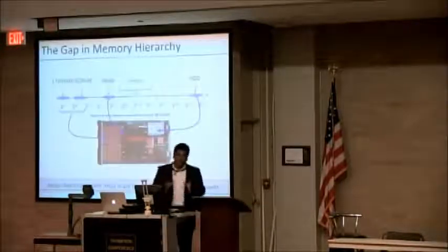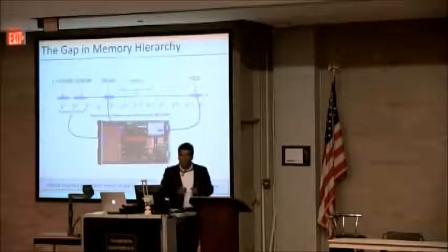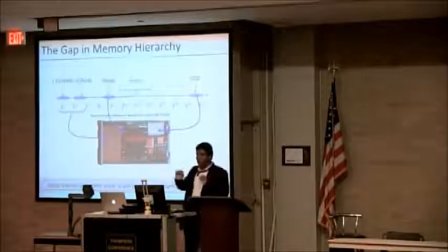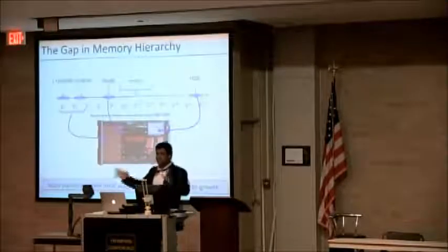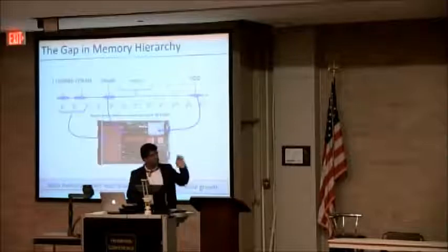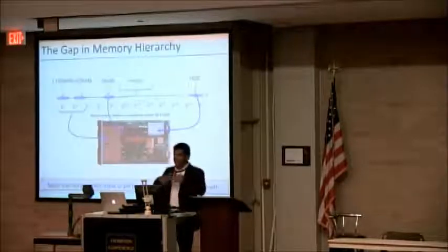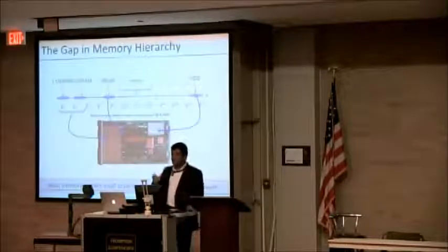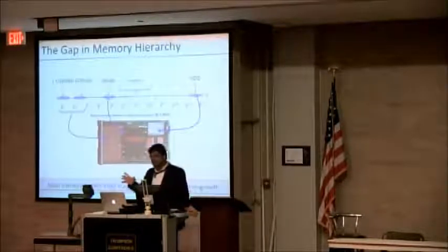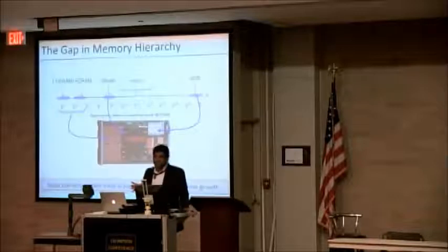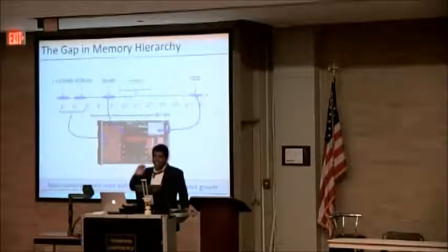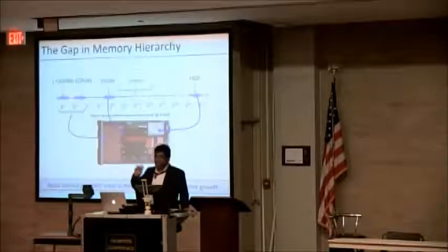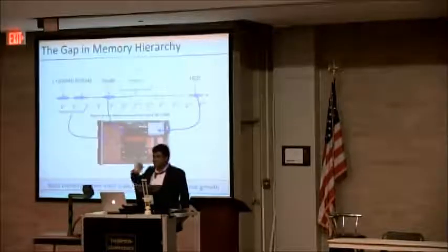One of the biggest problems with memory is that we're all taught this memory hierarchy. The memory hierarchy is about capacity and latency — how many cycles does it take to access a particular structure? We all know this: L1 cache, a couple of cycles; last level cache, a few tens of cycles; memory, a few hundred cycles; and then there's disk.